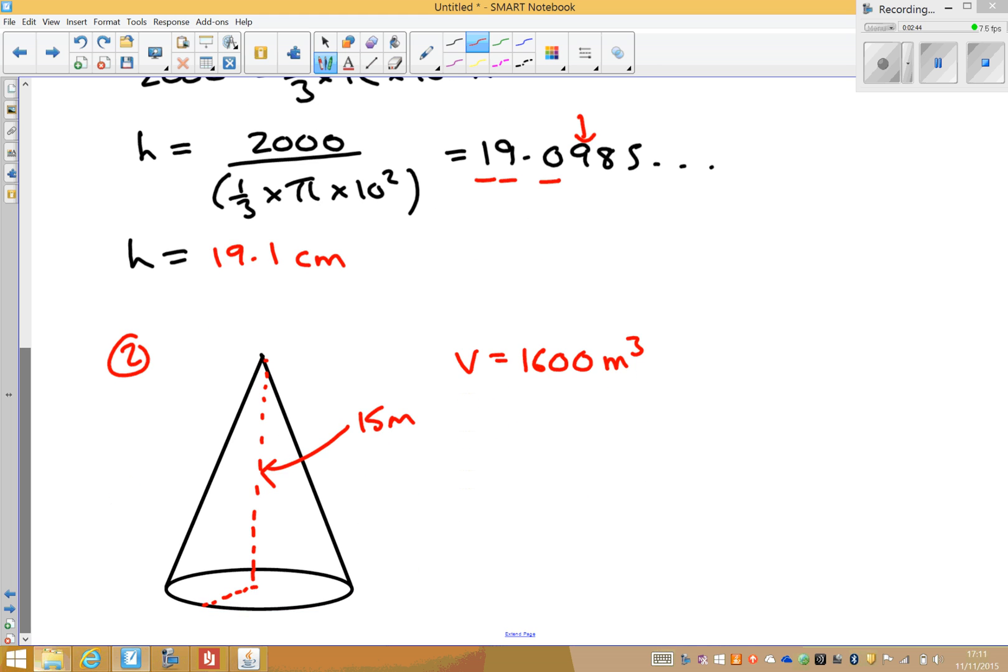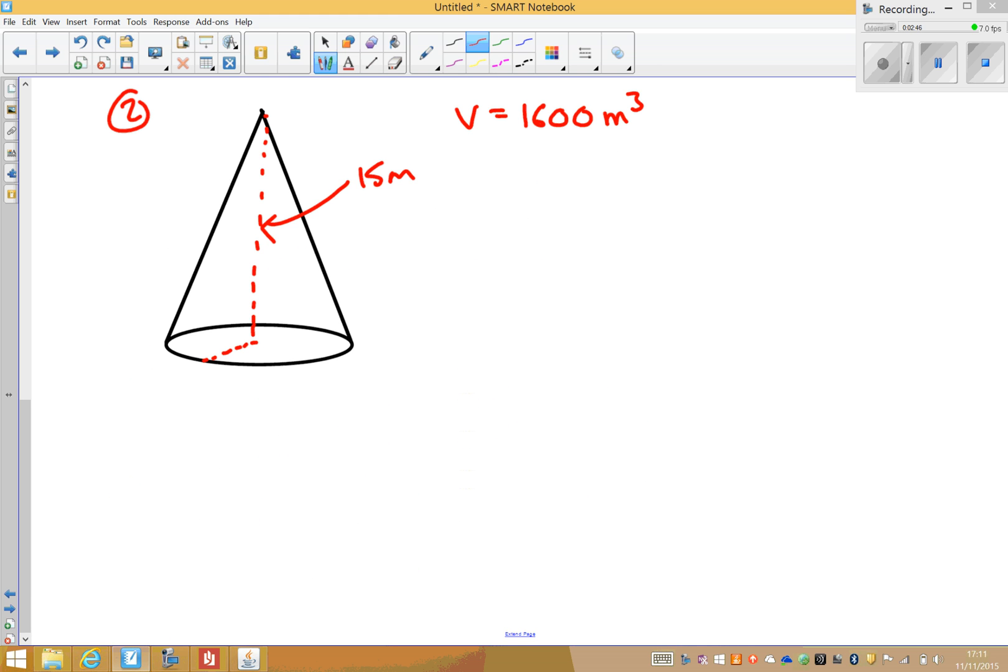Moving on to my second example. In this example, I'm telling you that the volume is 1,600 meters cubed. You're told the perpendicular height of the cone, and this time you need to find the radius.